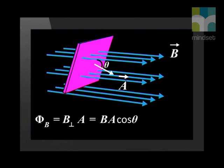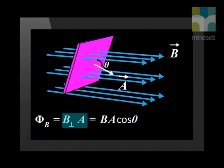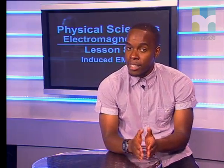Then we looked at the magnetic flux through a surface. Magnetic flux is the product of the component of the magnetic field normal to the surface and the surface area. Magnetic flux, phi, is equal to the product of the magnetic field B and the area A cos theta, where theta is the angle between B and the normal to the surface. Remember that magnetic flux is measured in Weber, magnetic field strength is measured in Tesla, and the area is in square meters.